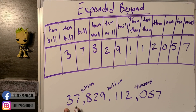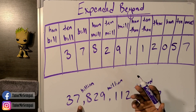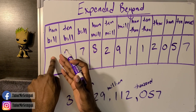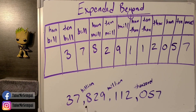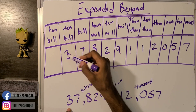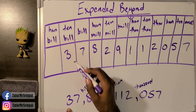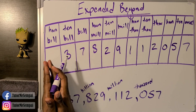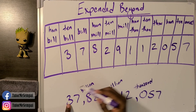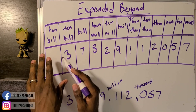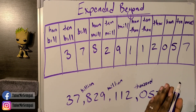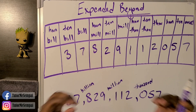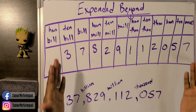Let's check our work. When we read the number, we said 37 billion — no hundred billions — so it makes sense to have nothing in the hundred billions column. If we had filled something in there, it would contradict what we read. Starting from the right and checking against what your number reads helps you catch any mistakes.